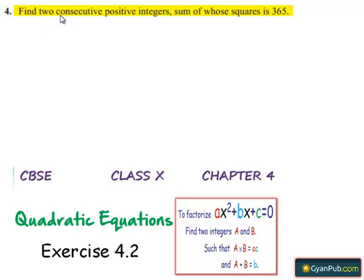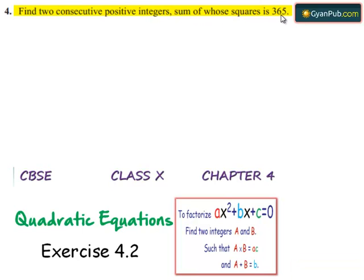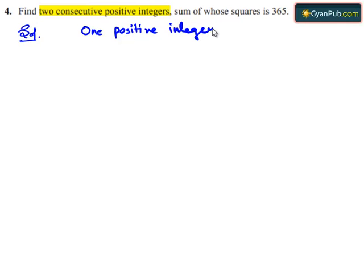Coming to the fourth problem: find two consecutive positive integers, sum of whose squares is 365. So let us see the solution. Assume one positive integer as x, so one positive integer is equal to x. The consecutive positive integer becomes x plus 1.